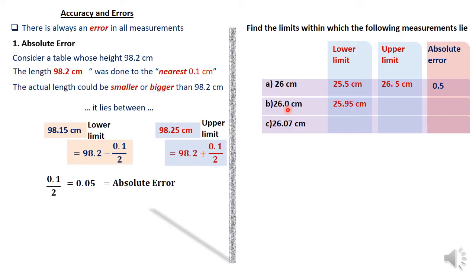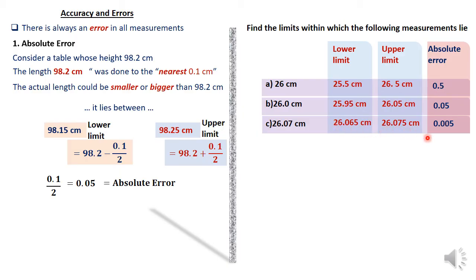For 26.0, this number was written correct to the nearest one decimal place. It could have been as low as 25.95 or as high as 26.05, because the absolute error is 0.05. For 26.07, it could have been anywhere between 26.065 and 26.075, because the absolute error is 0.005. Adding this to the value gives the upper limit; subtracting gives the lower limit. This clarifies what absolute error really means.